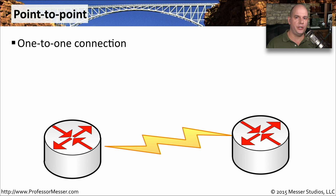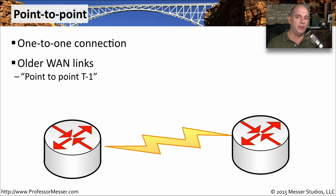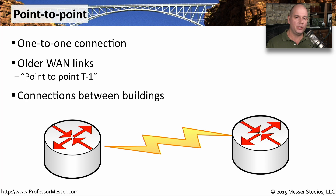A point-to-point topology is exactly the way it sounds. You have a device on one end and a device on the other end, connected to each other with nothing in the middle. We see this often with older wide area network links like T1 or E1 connections. You may also be connecting buildings together with a single strand of fiber or copper between them — that would also be a point-to-point connection. The important thing is that one device is connected to the other with nothing in the middle.